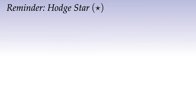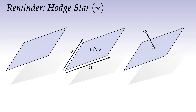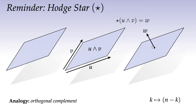The Hodge star says: if I have a k-form, say a two-form, there are two complementary ways to describe it. One is as the wedge of two vectors, u ∧ v. Another is that this two-form is dual to a one-vector w: ⋆(u ∧ v) = w. Our linear algebra analogy is the orthogonal complement — a k-dimensional linear subspace can also be encoded by specifying the complementary n-minus-k subspace. The difference with the Hodge star is that k-forms encode a magnitude and orientation, whereas linear subspaces do not.